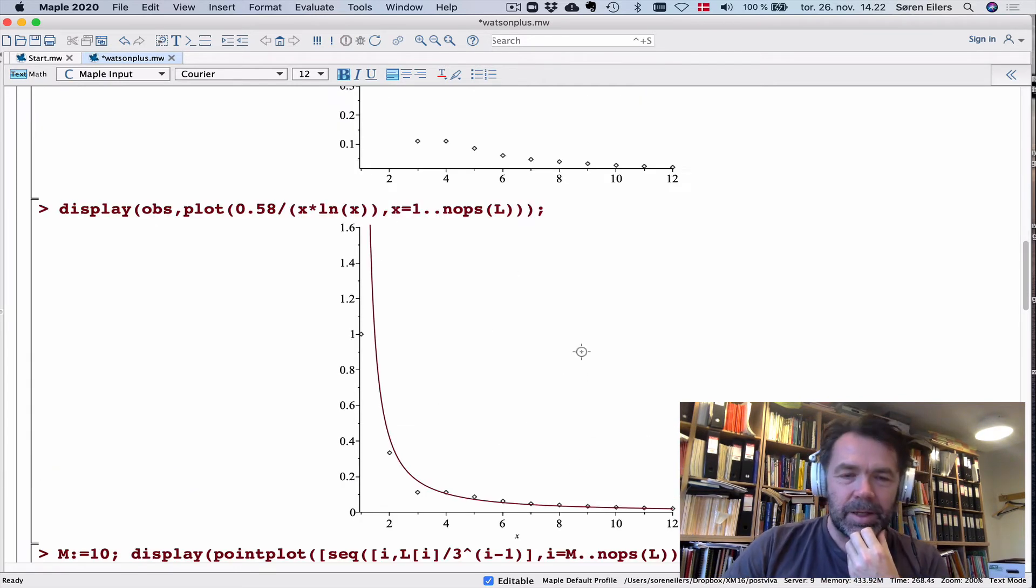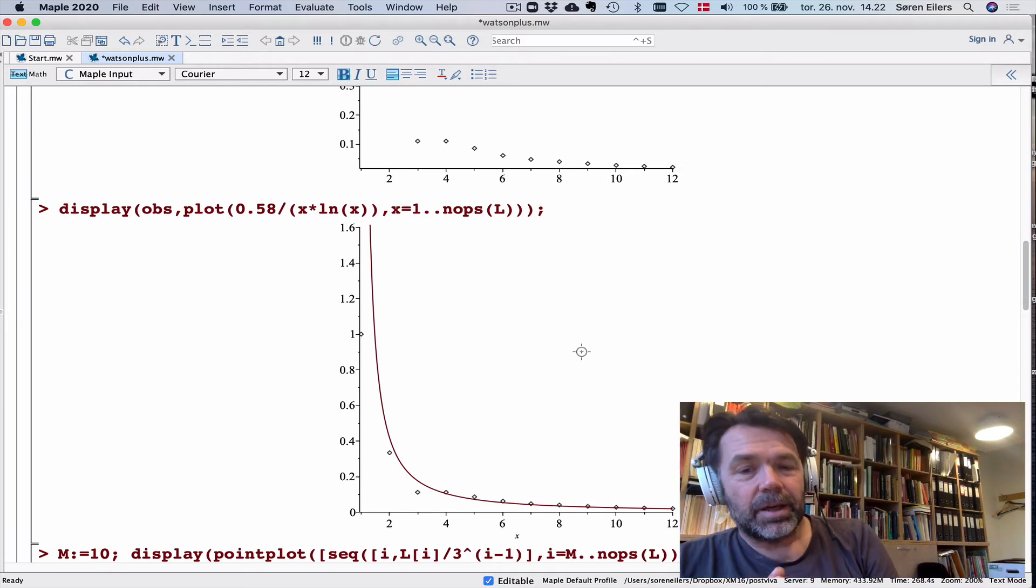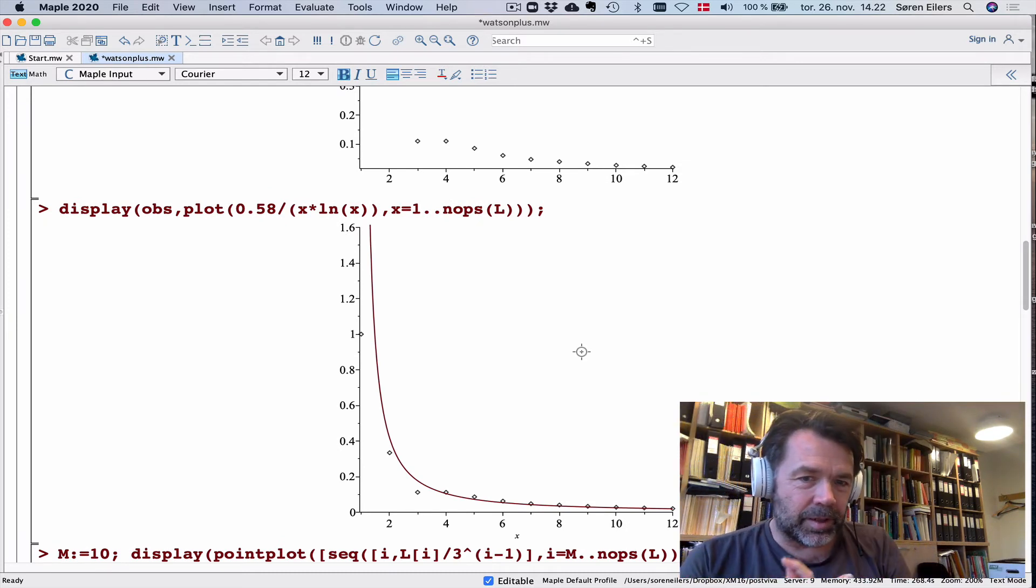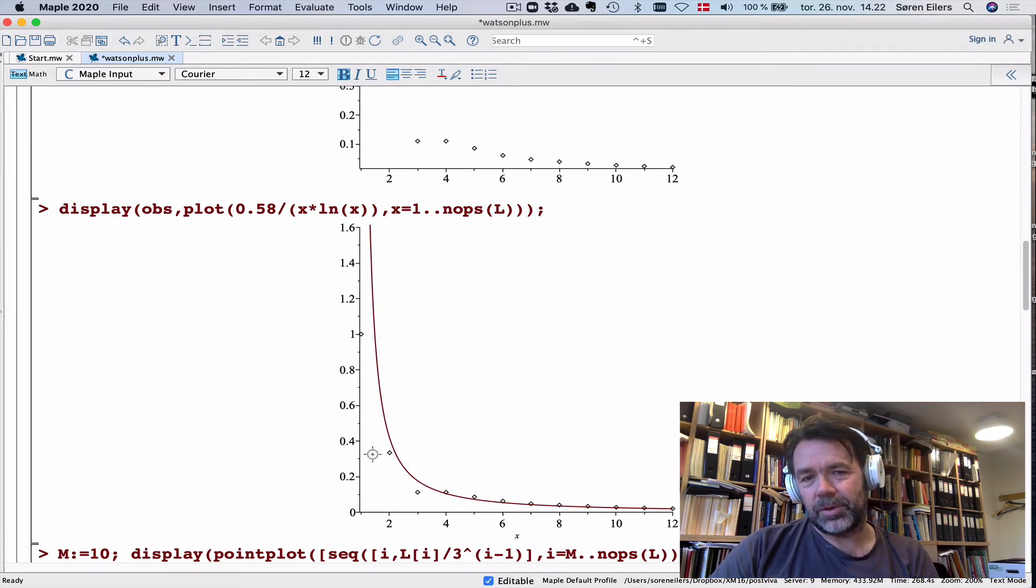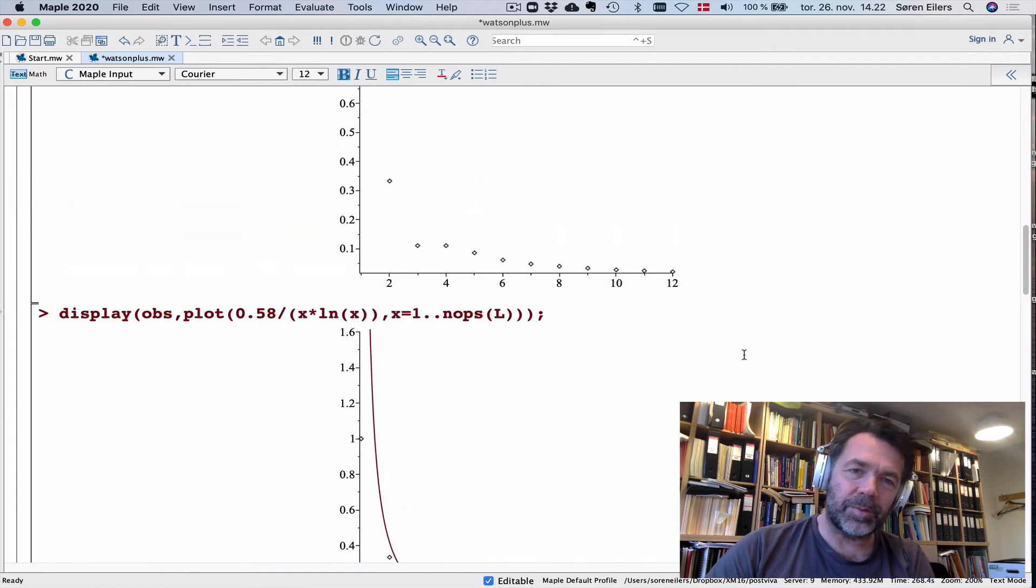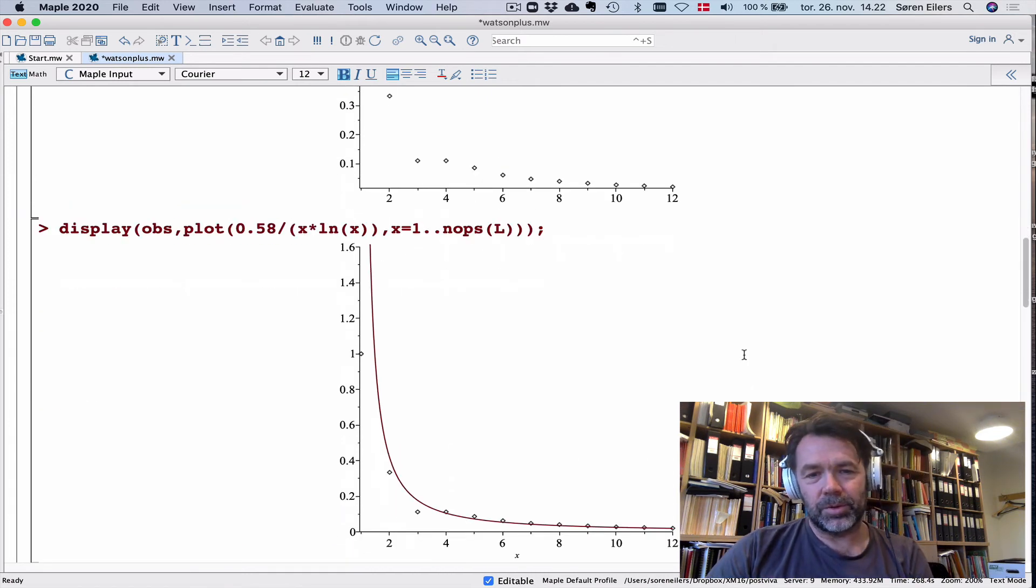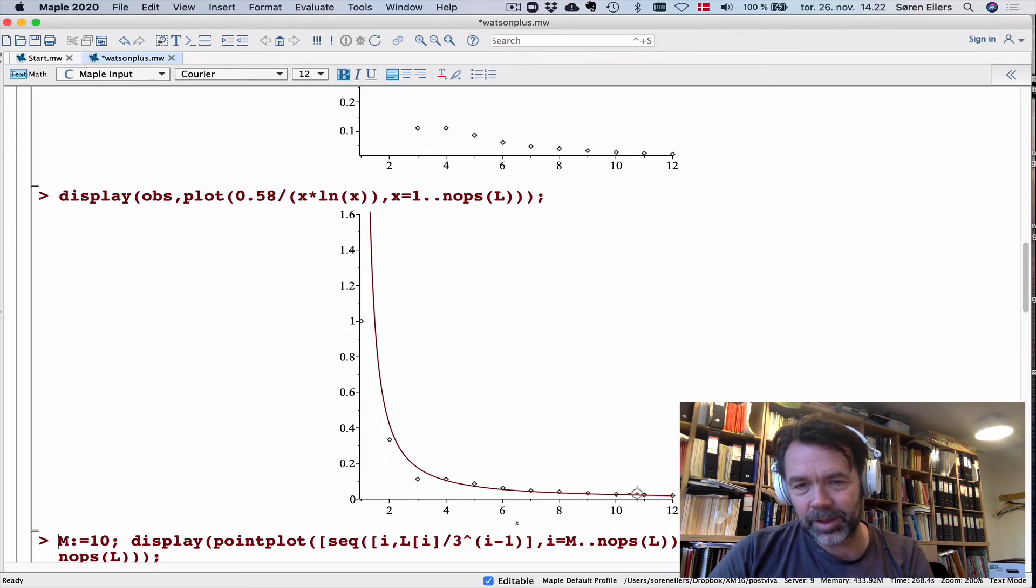He says, well, that looks a little bit like 1/(x log x). Then you can fiddle with the coefficients, and you get a fairly decent fit if you choose the constant 0.58. I did this with trial and error. It's a decent fit. Of course, this is not very good here, here, and here. But maybe we're expecting some sort of beginning behavior which is atypical. The fact that it seems to fit very well over here, up to 10 and 12, looks promising.